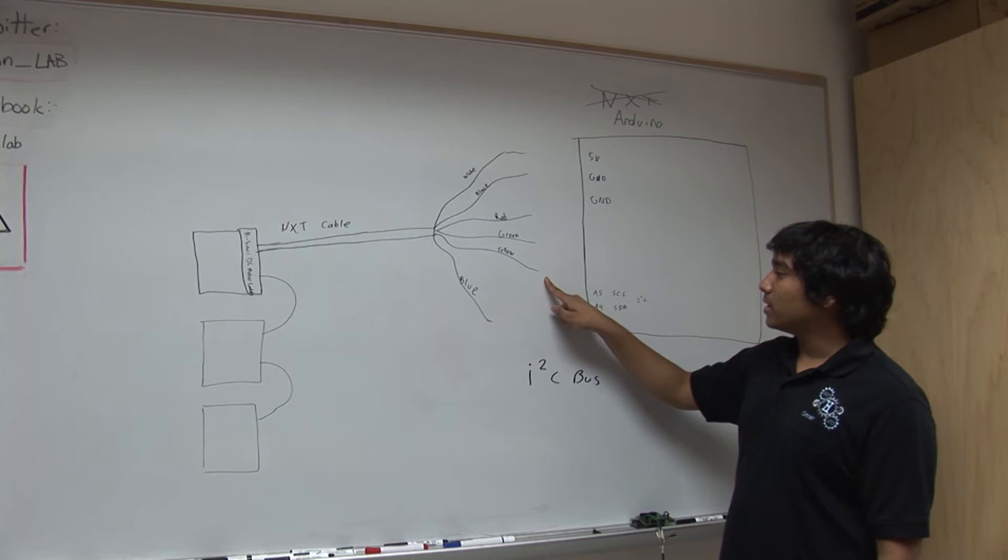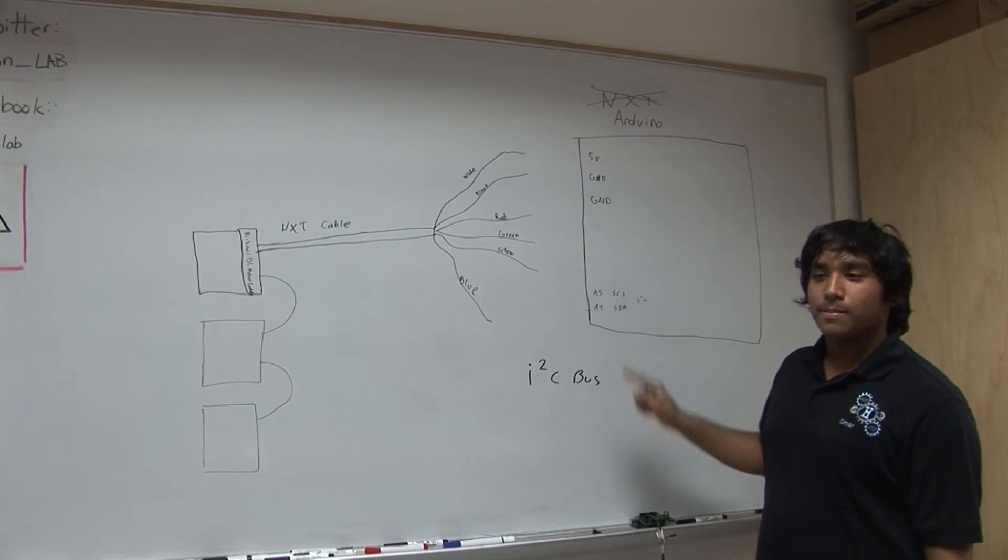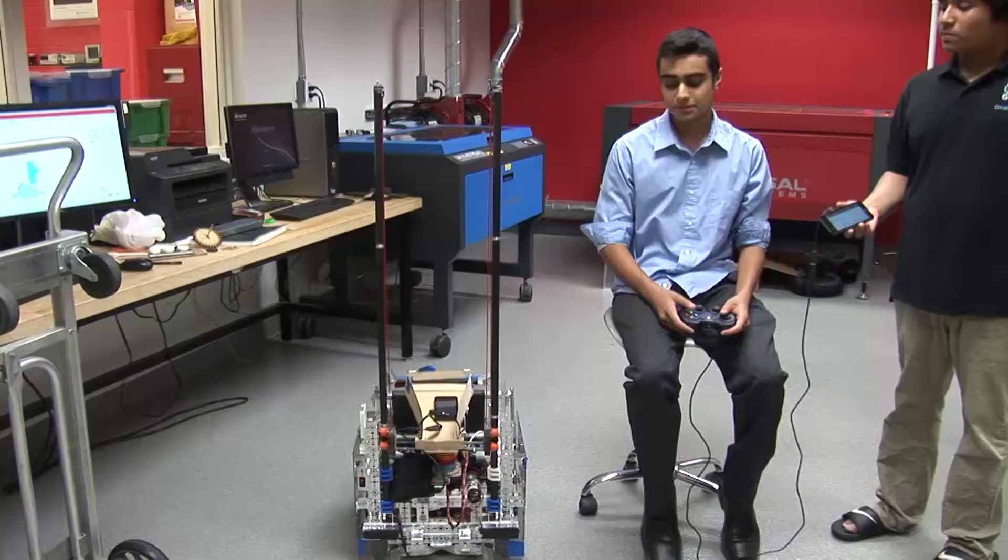which is used to send commands from the Arduino to the motor controller. The yellow one should be connected to the A5 pin, and that's used for the clock signal on the I2C. The blue cable is connected to the A4 pin, which is used for the data signal on the I2C.